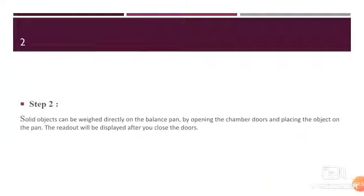Step number two: solid objects can be weighed directly on the balance pan by opening the chamber doors and placing the object on the pan. The readout will be displayed after you close the doors.